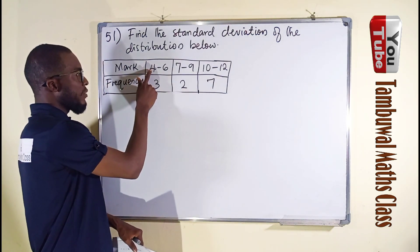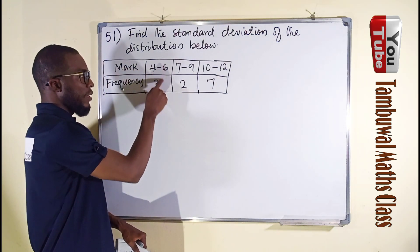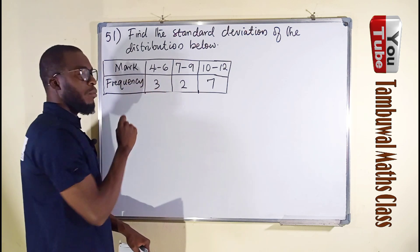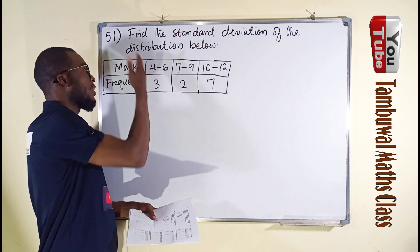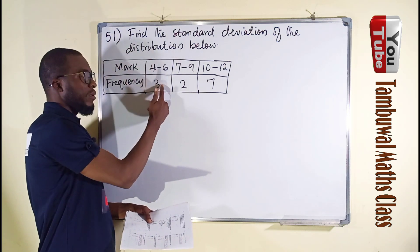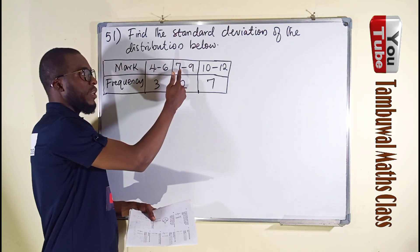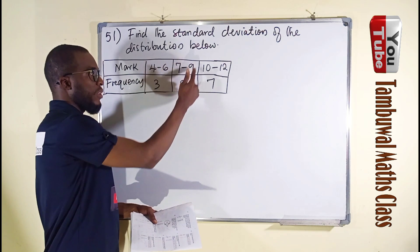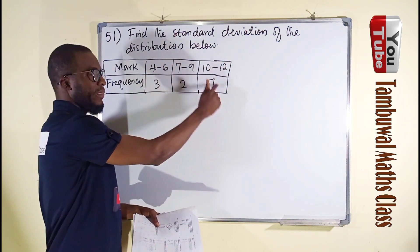The range of marks between 4 to 6, there are three numbers. Maybe there are even students that scored between this range of marks, there are just 3 here. Those that scored between 7 to 9, there are just 2. 10 to 12, there are 7.